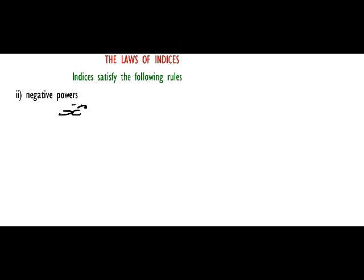The rule of negative powers: if you have a case like x raised to power negative n, that equals 1 over x raised to power n. The negative sign simply implies the reciprocal.